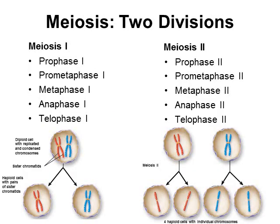Meiosis actually occurs in two separate divisions. Each division is broken down into prophase, prometaphase, metaphase, anaphase, and telophase — similar to what we saw in mitosis, but with a few differences. The first division is meiosis I, where we cut our chromosome number in half: starting with a diploid cell and ending with two haploid cells. Then we have meiosis II, where we pull apart chromosomes and separate sister chromatids, ending with four haploid cells.